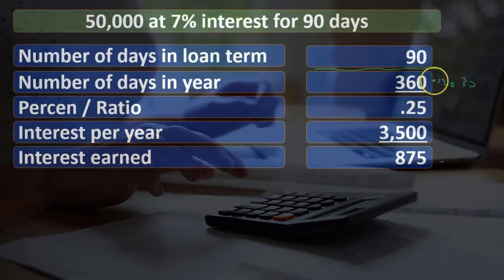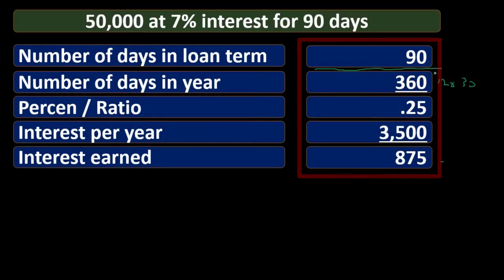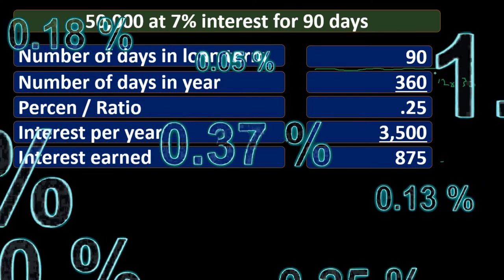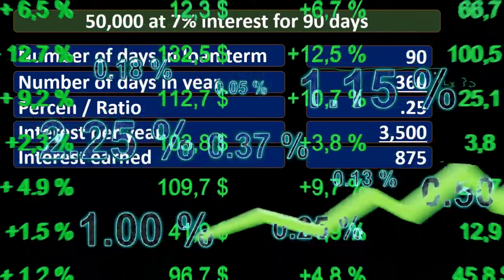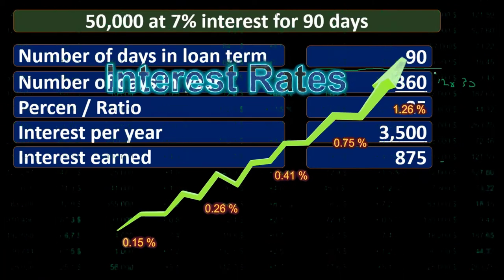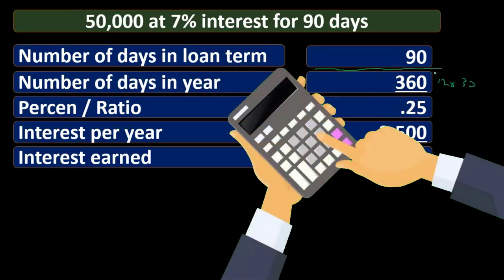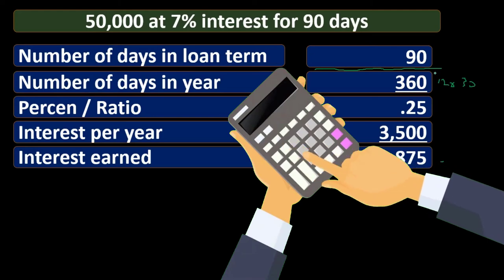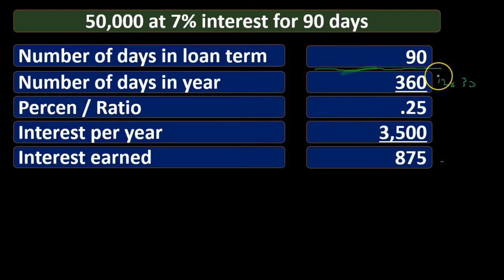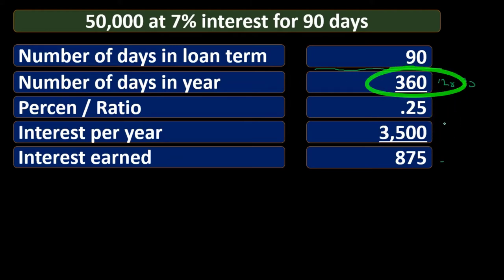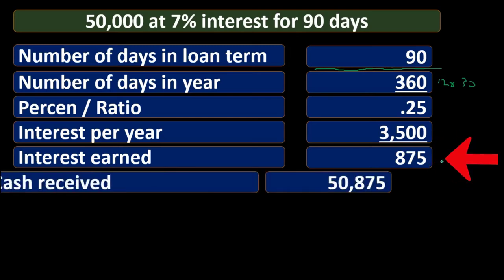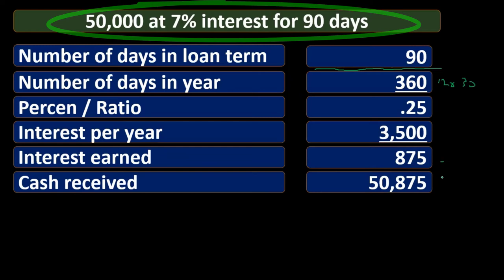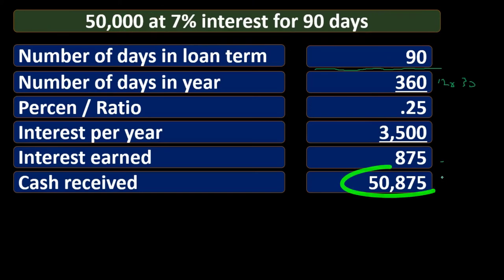This method reaches $875 with fewer steps. However, most students — and myself — find the ratio less intuitive than saying 'here's the interest per year, now break it down to a daily or monthly rate, then multiply by the number of days or months.' It's the same math and the same end result, just a different order of calculations. Adding $875 to the original $50,000 gives $50,875.